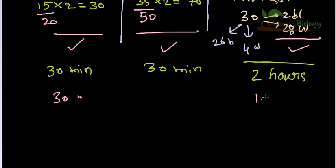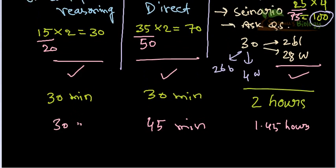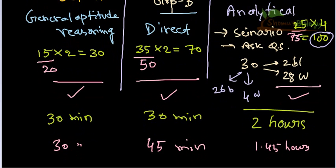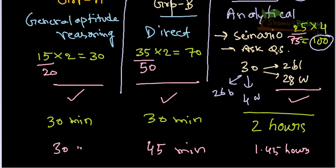You can adjust the time — for example, one hour forty-five minutes for Group C and forty-five minutes for Group B. It's a personalized decision. I also want to talk about how to solve MCQ questions, since each has four options A, B, C, D — but I'll cover that strategy in the next video.